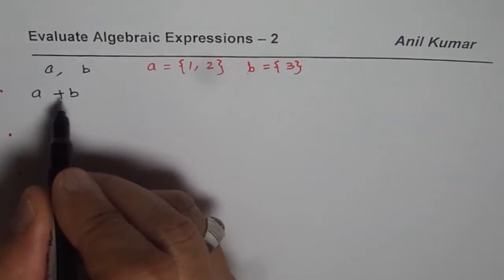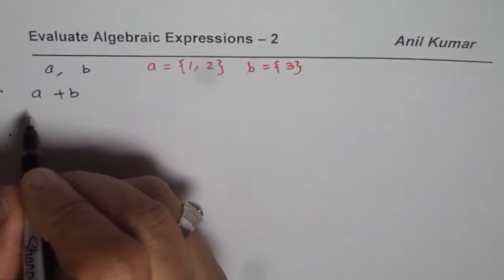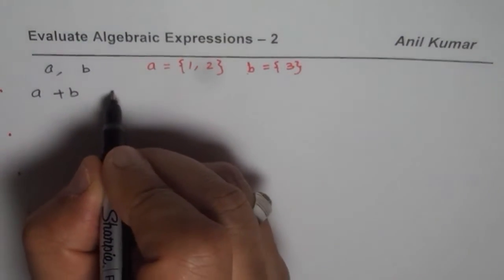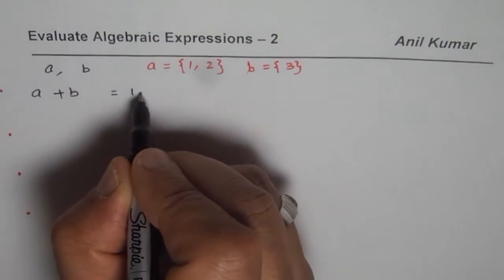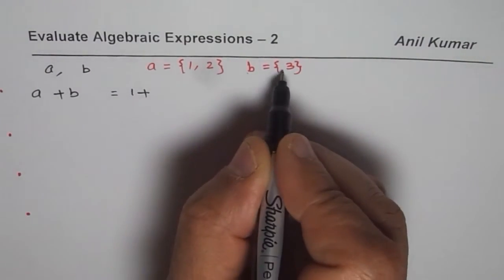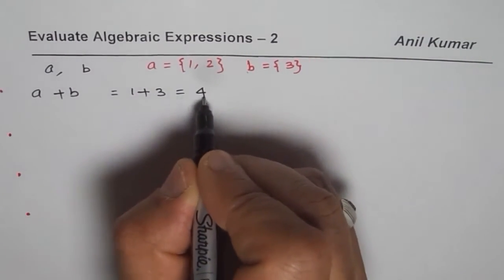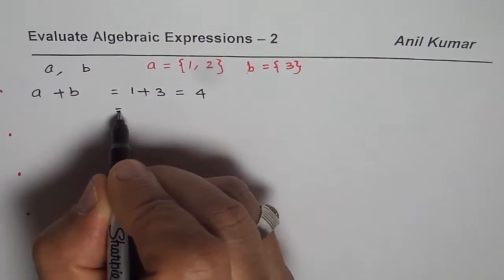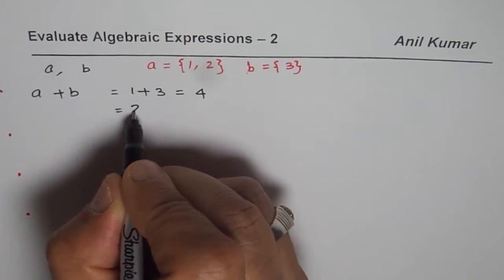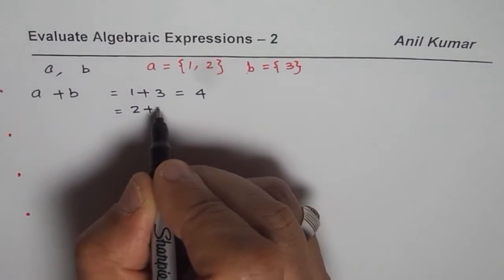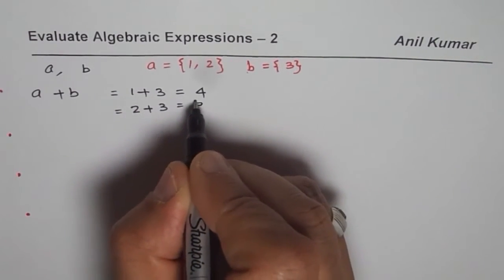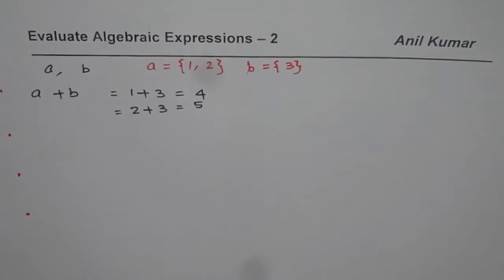So A plus B, if I use 1 then I could write this as equal to 1 for A and B is 3. So 1 plus 3 that gives me 4. If I use 2 then I have to write this as 2 plus B is 3, I get my answer as 5. You get the point. So that is how we can do the operation.